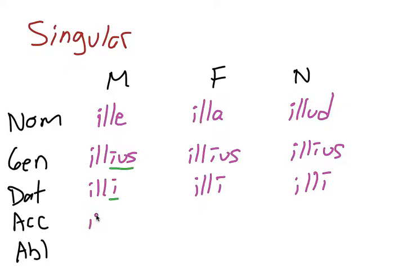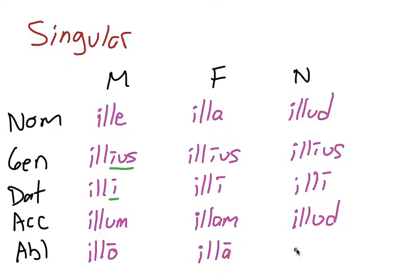Accusative, illum, illam, and then for neuter of course illud, because it has to be the same as nominative, and then ablative, illo, illa, illo.